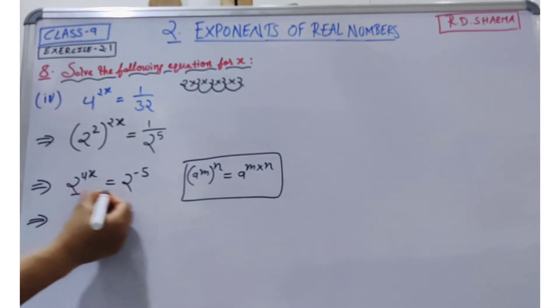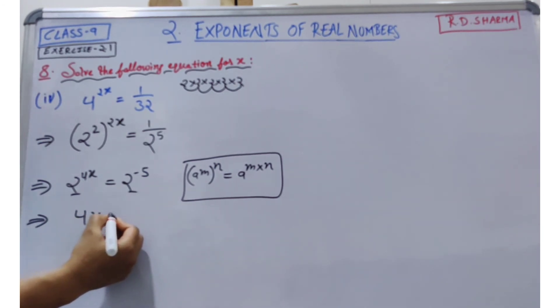Now our base is the same. So what do we do? We can equate the powers. This means 4x is equal to negative 5.